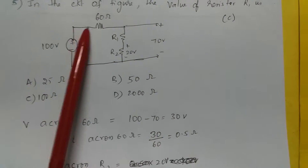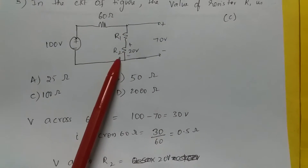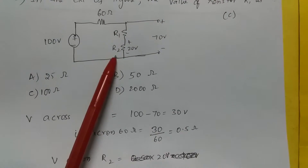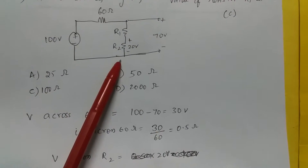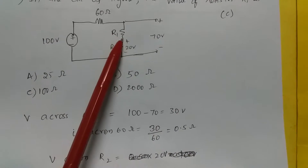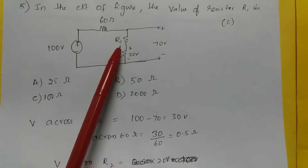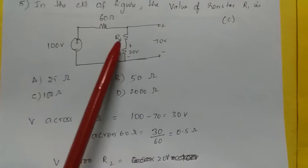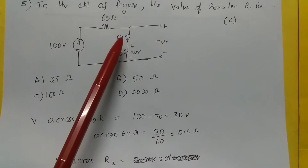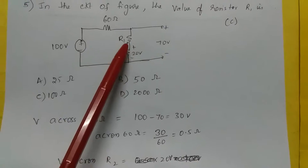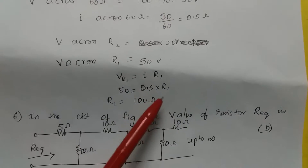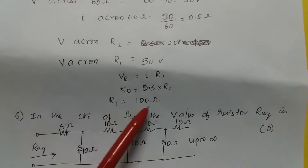The current at this point is 0.5 amps. The voltage at another node is 20 volts, so the voltage across R1 is 50 volts, with current I = 0.5 amps. Using V = I·R, we get R1 = 50/0.5 = 100 ohms. The right option is C.